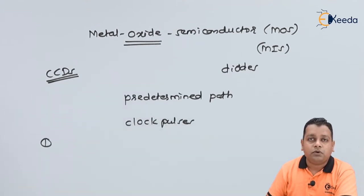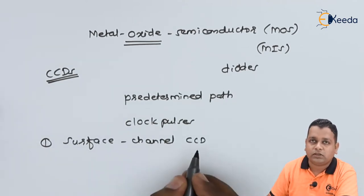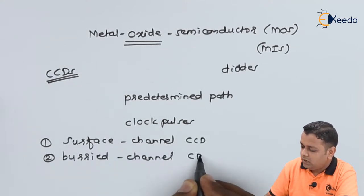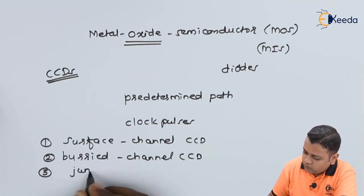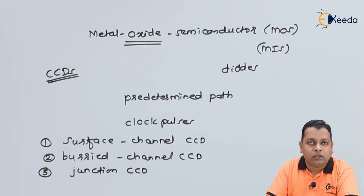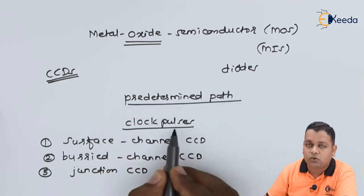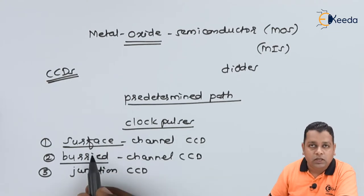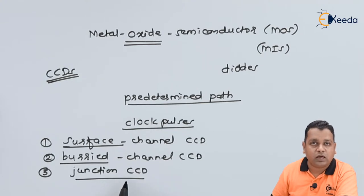CCDs are of three types. The first type is called the Surface Channel CCD. The second type is called the Buried Channel CCD. The third type is called the Junction CCD. The names are self-explanatory: charge transfer occurs with respect to the surface area of the semiconductor for the first type, the deep area for the Buried type, and the PN junction for the third type.